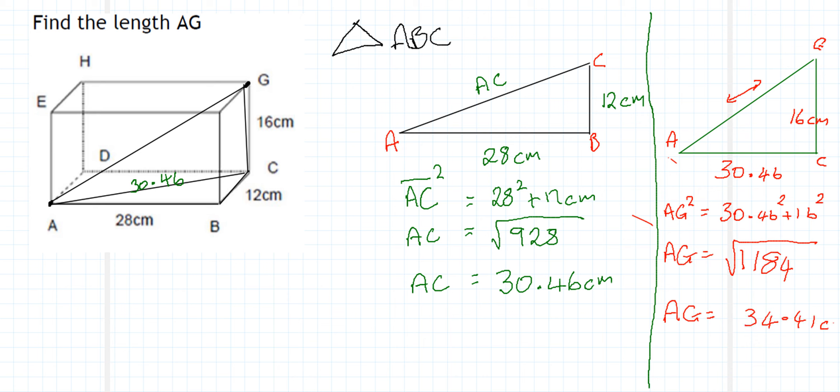So that's how we work out that particular problem. So the length of AG, in this case here, showing all the working, and you need to show all this working, is equal to 31.41 centimeters.